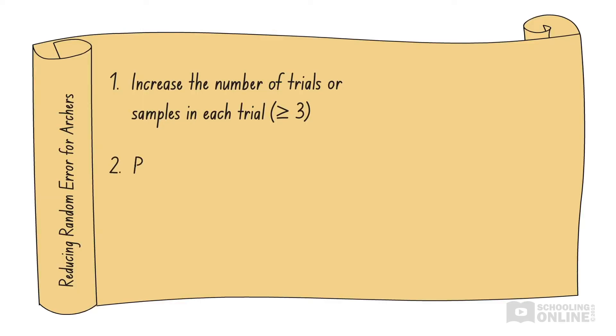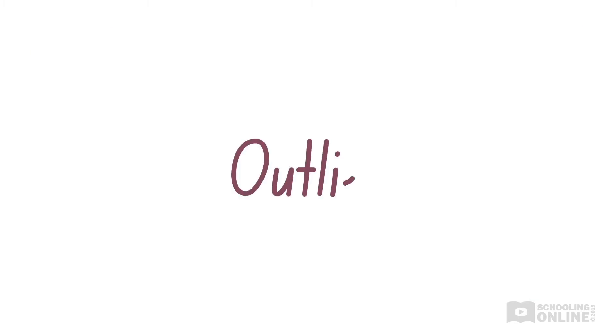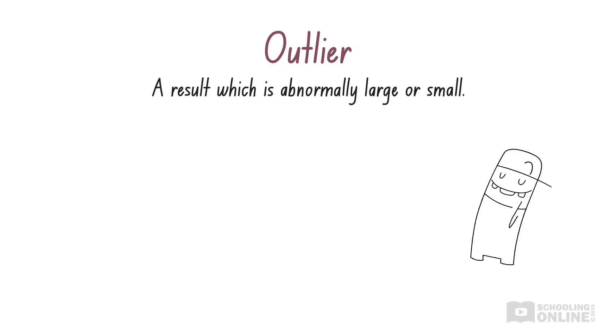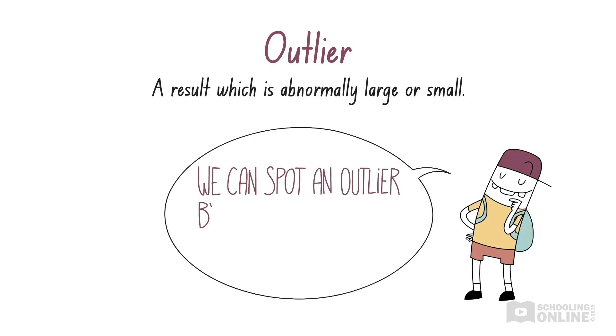The second way to reduce the effects of random error is to remove outliers from our results. An outlier is a result which is abnormally large or small. Outliers may be caused by extremely large random errors, making them much bigger or smaller than all the other data points. The only way we can spot an outlier is by collecting lots of results and comparing them.